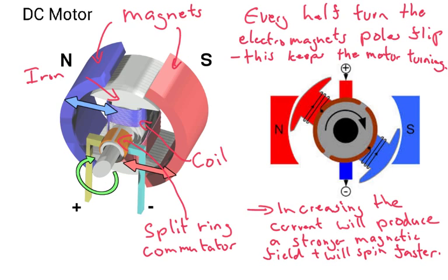By increasing the current, you'll produce a stronger magnetic field, and this means the motor will actually turn faster. The more current you put in, the stronger the magnetic field is going to be, and this will mean it should spin around faster.